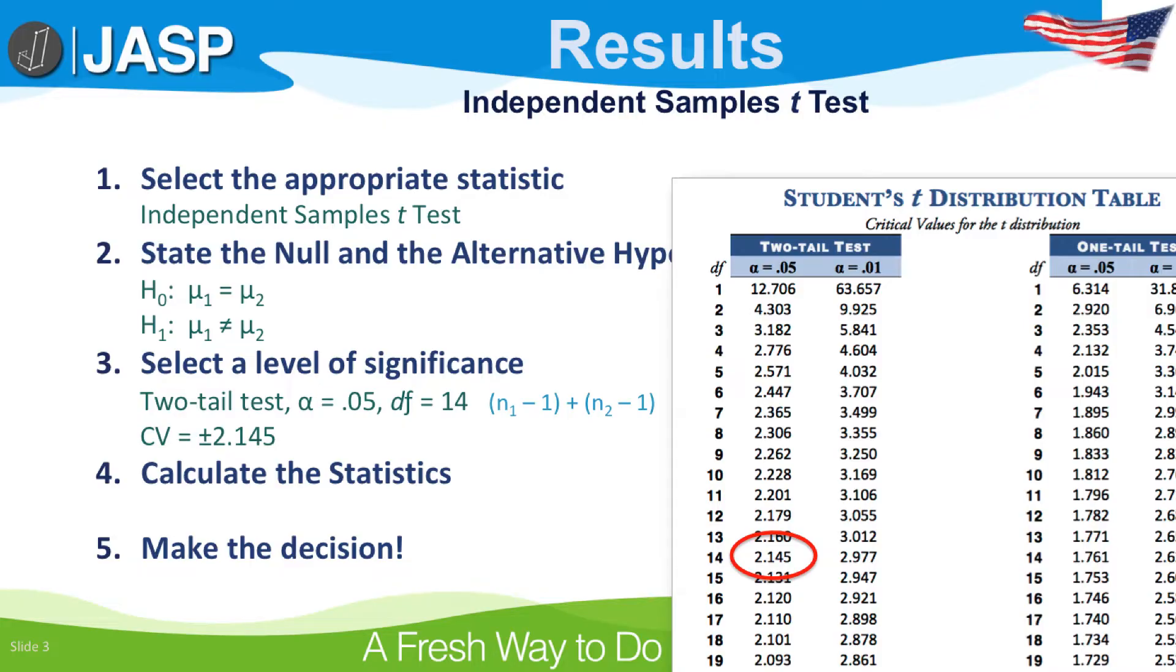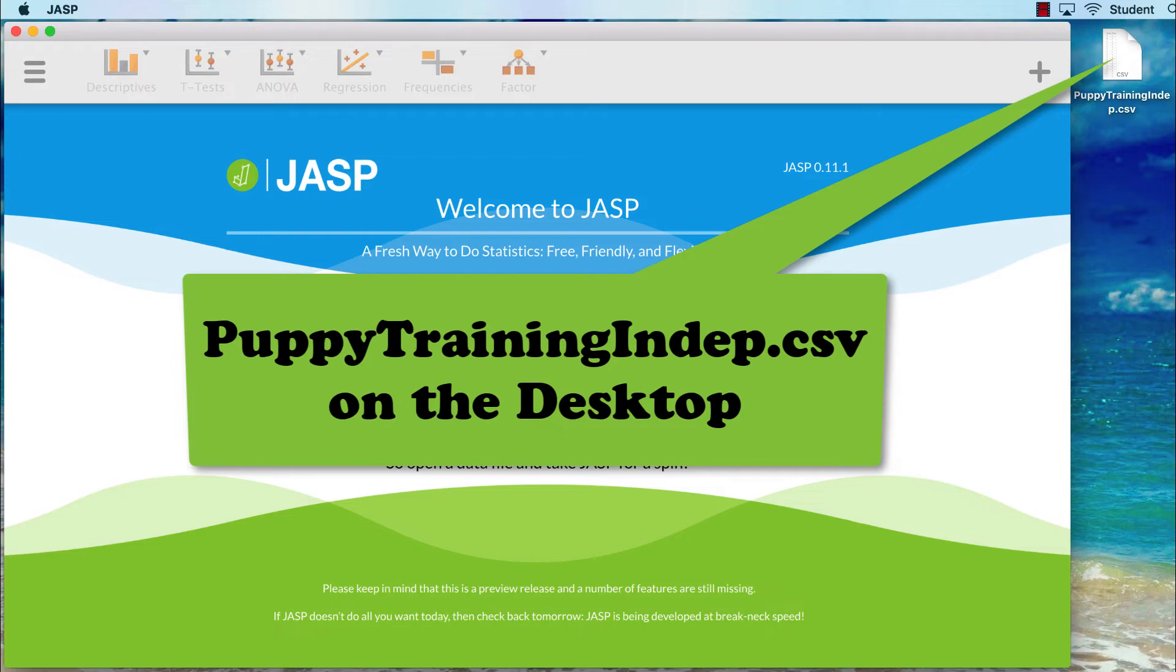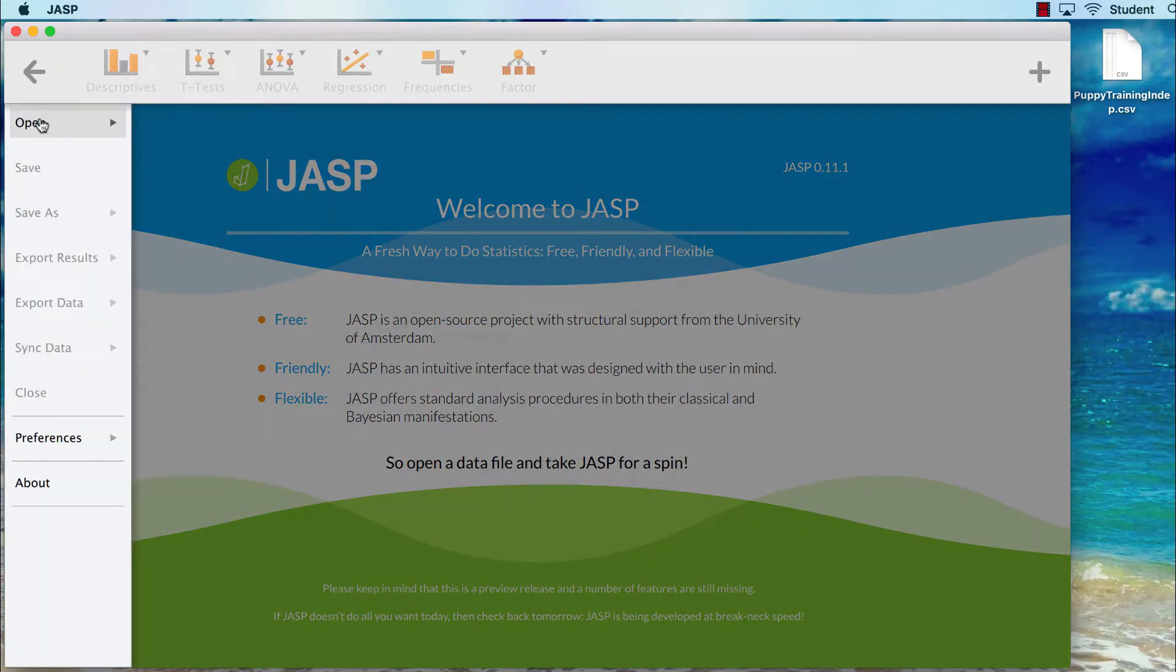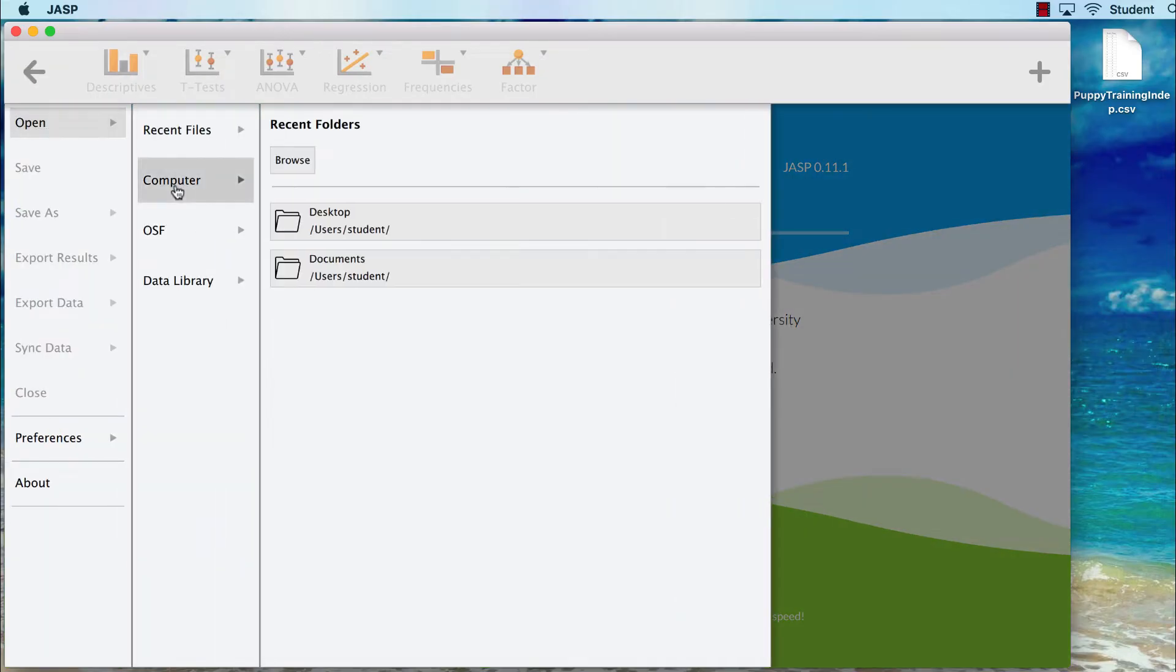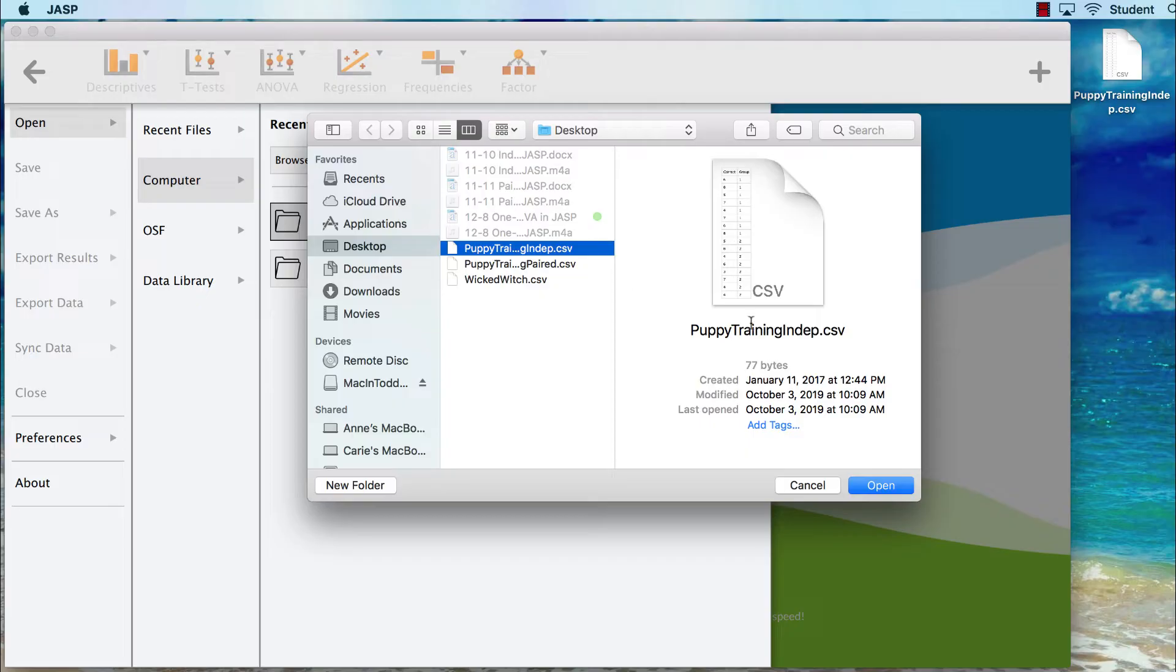Step four, calculate the statistics. Let's go to JASP. Begin by placing the puppy training data on your desktop. We will open our data set by going to our main menu icon, Open, Computer, Desktop, PuppyTrainingIndependent.csv, and then clicking Open.